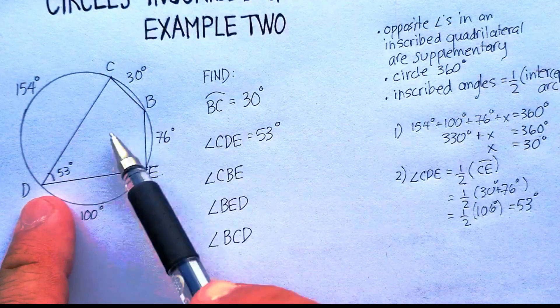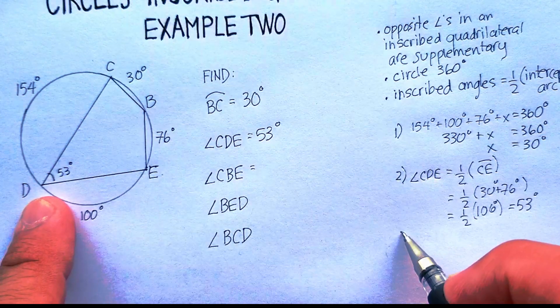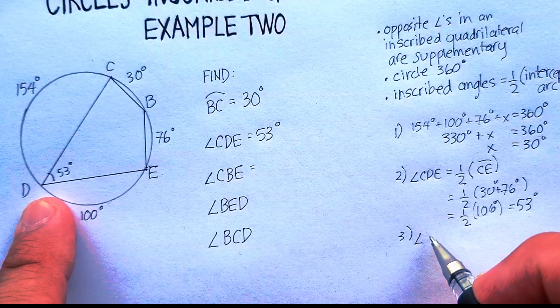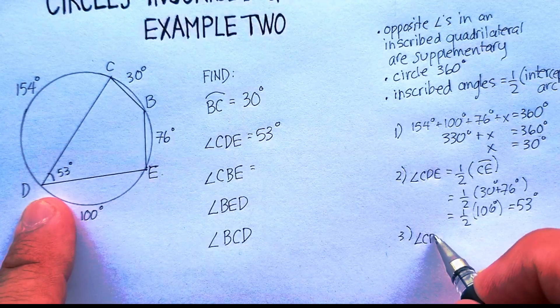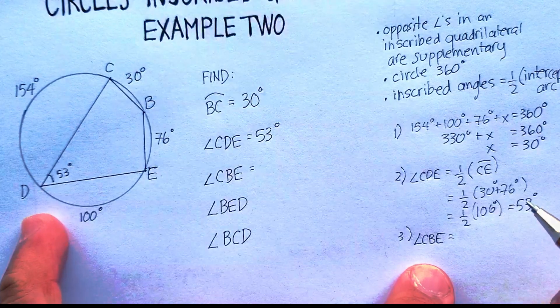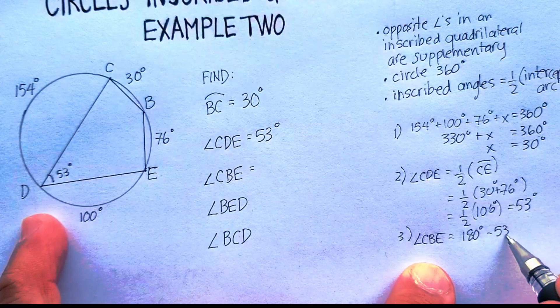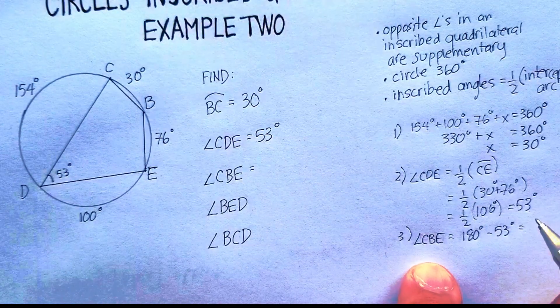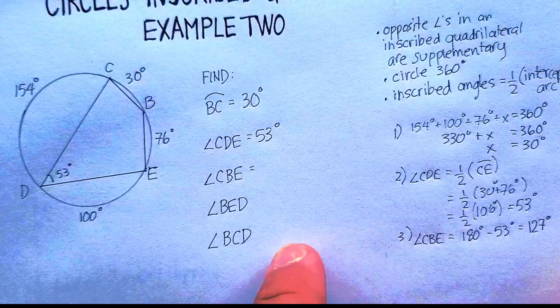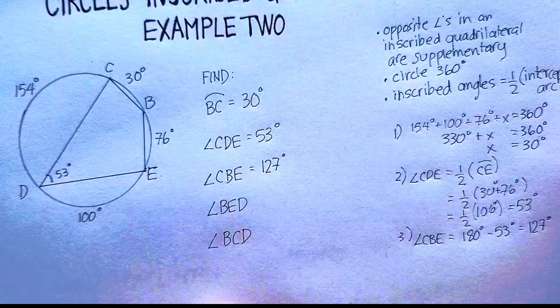Now, again, I know that this is supplementary. So I'm going to go CBE, which is the next one. Number three, CBE, supplementary to CDE. So I'm going to say 180 minus 53 degrees. And that's going to be equal to 127. So I know that this is 127 degrees.